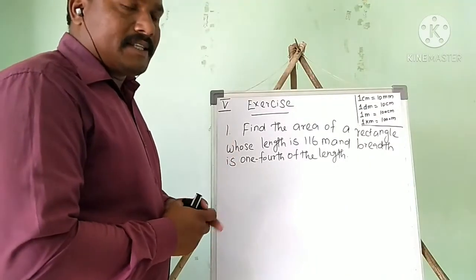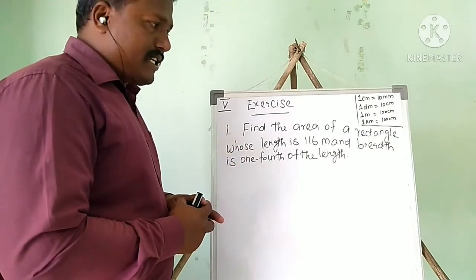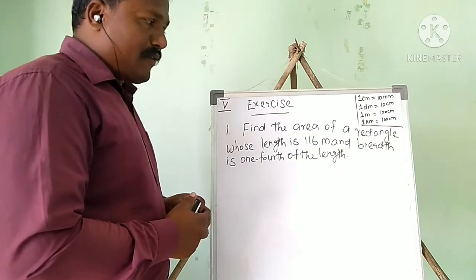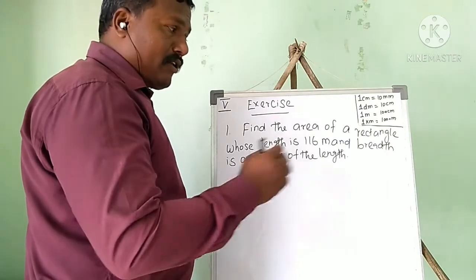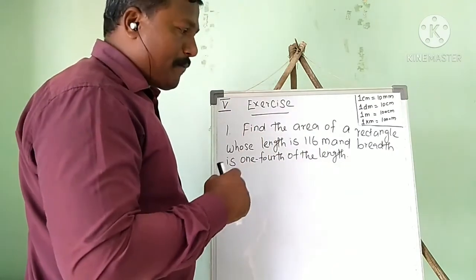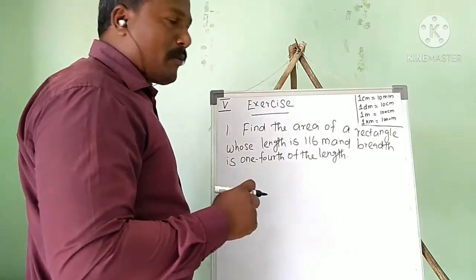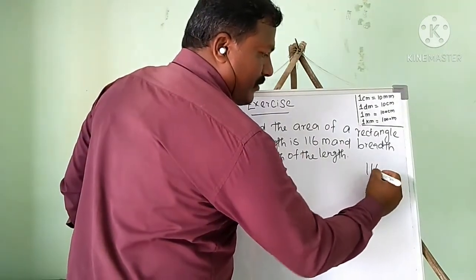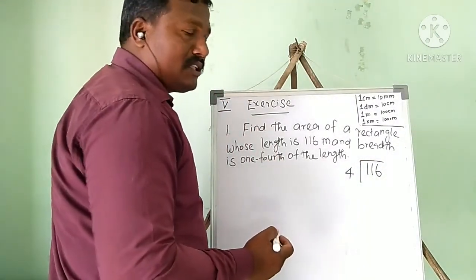Okay students, let me see another sum. Find the area of a rectangle whose length is 116 meters and the breadth is one-fourth of the length. First we have to find the breadth. One-fourth means we divide the length 116 by four and take one part. So we need to divide 116 by 4 to get the breadth value.